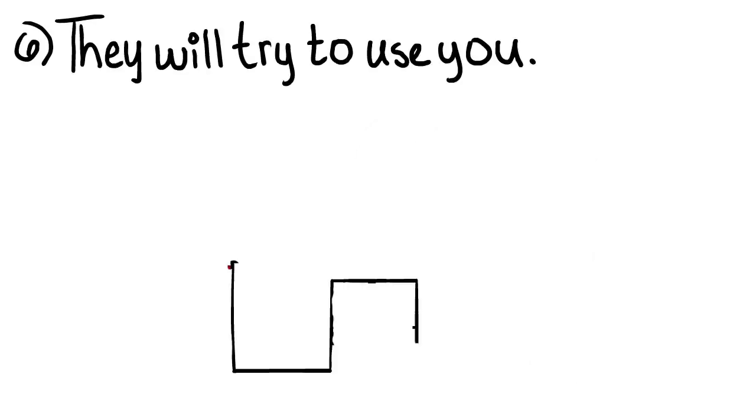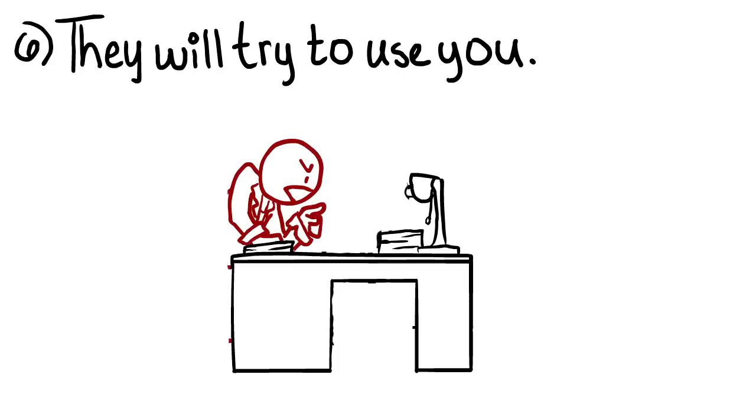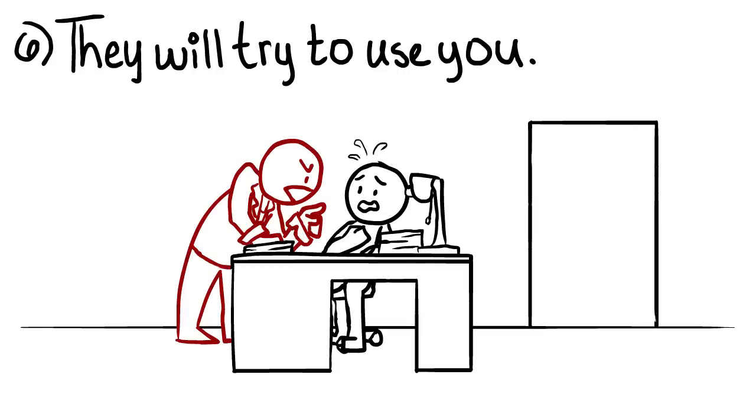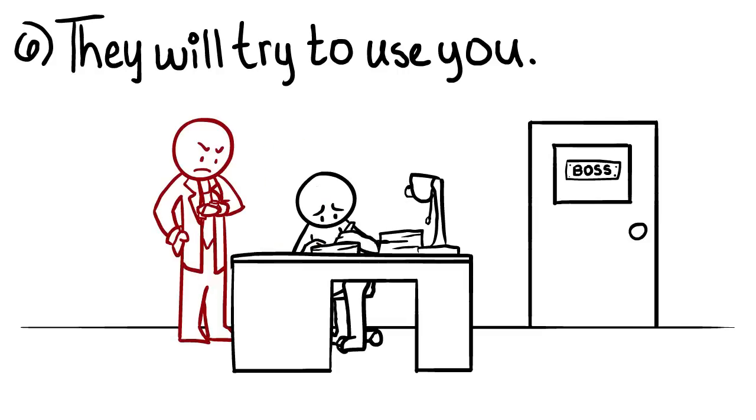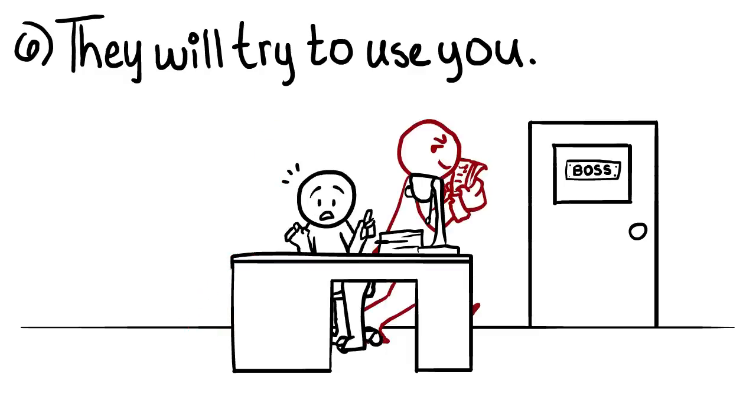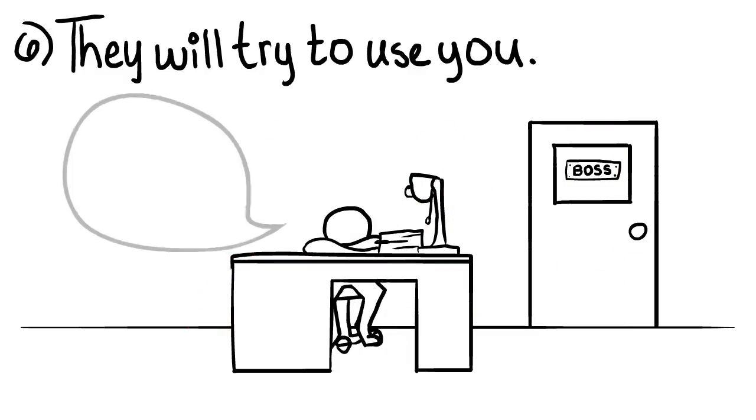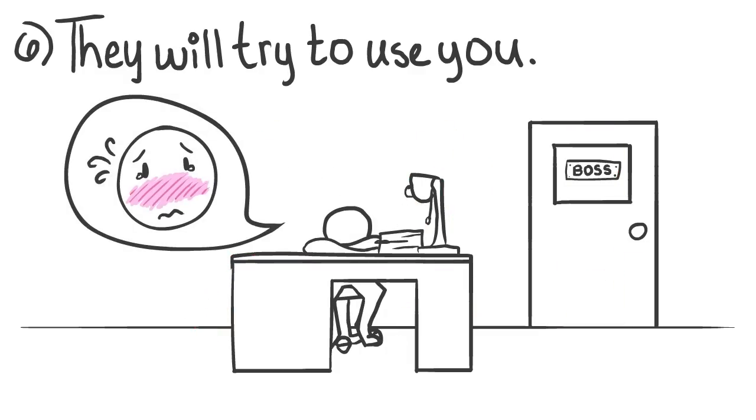6. Psychopaths will try to use you. The end goal of a psychopath is to get something from you. Many times, this is simply to watch you die, or to rape and sexually humiliate you. Other times, it can involve manipulating you into achieving their goals.